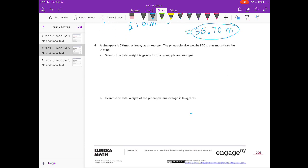A pineapple is 7 times as heavy as an orange. The pineapple also weighs 870 grams more than the orange. What is the total weight in grams for the pineapple and orange? So I'm going to use tape diagrams here. A pineapple is 7 times as heavy as an orange, so here is the orange. The pineapple is 7 times that heavy. It also weighs 870 grams more than the orange, so these two parts are equal, then this part is equal to 870 grams more. So six of the pieces, these six, are equal to 870.